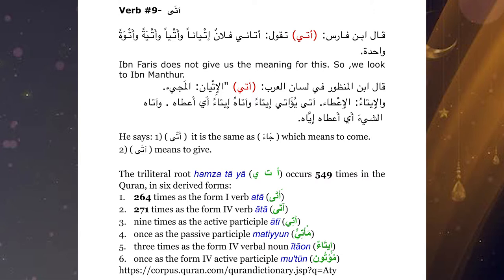He gives us a second verb form, a second derivative: al-ita'u. And he says it is al-i'ata' — meaning to give, a giving, something that is a gift.